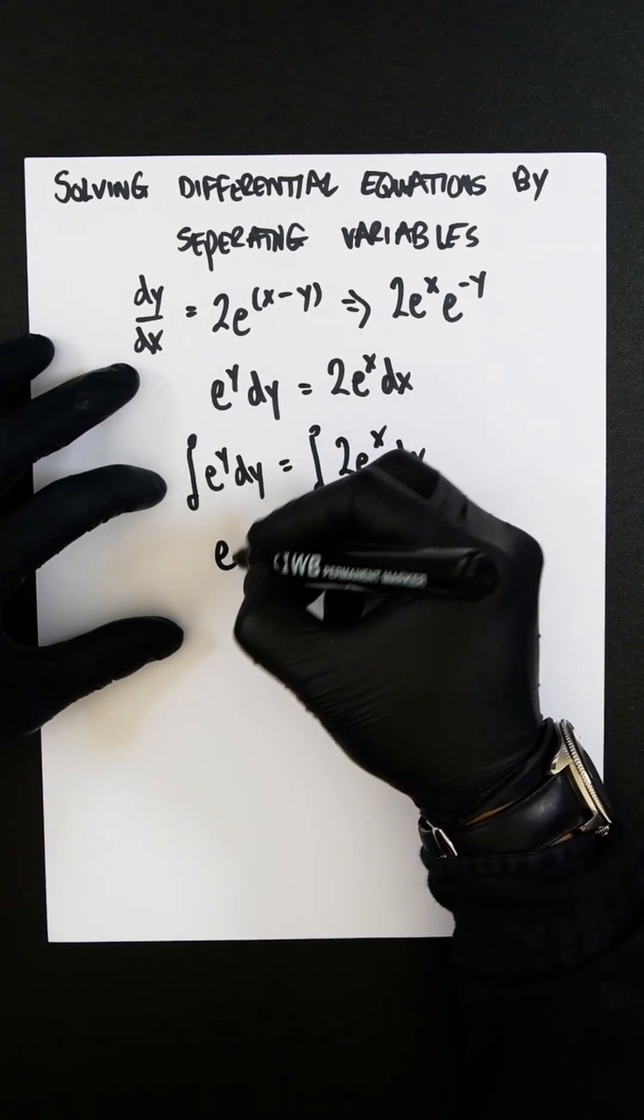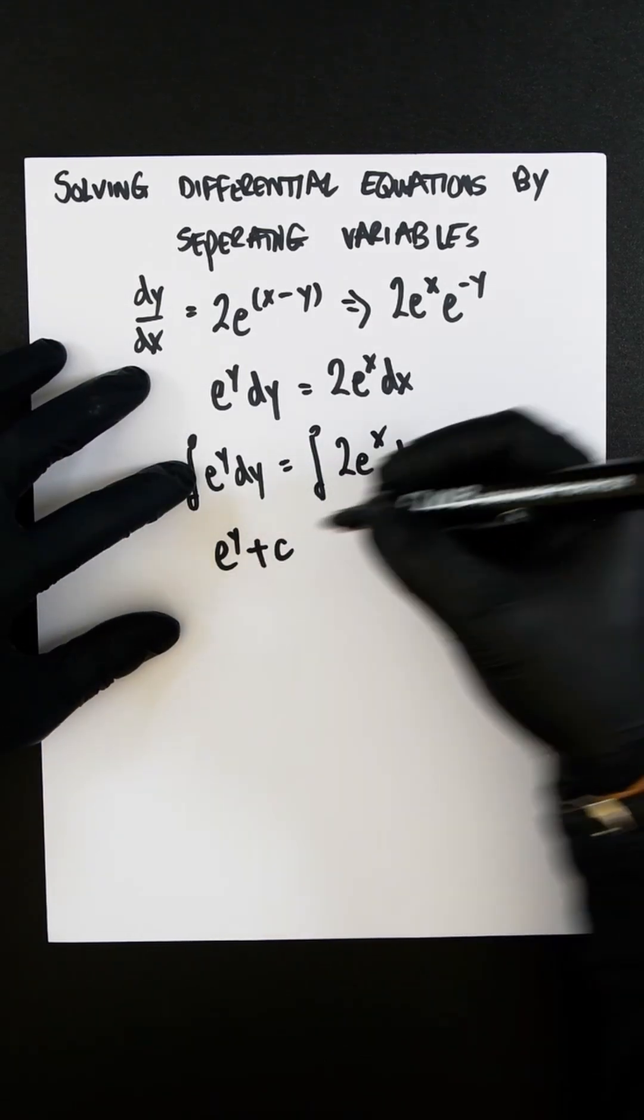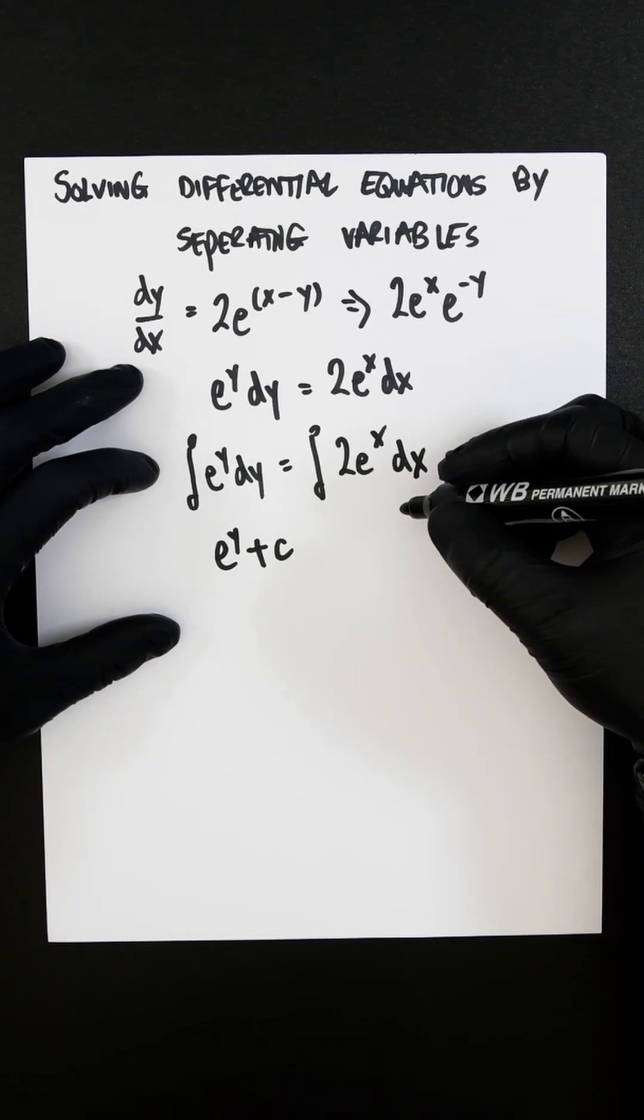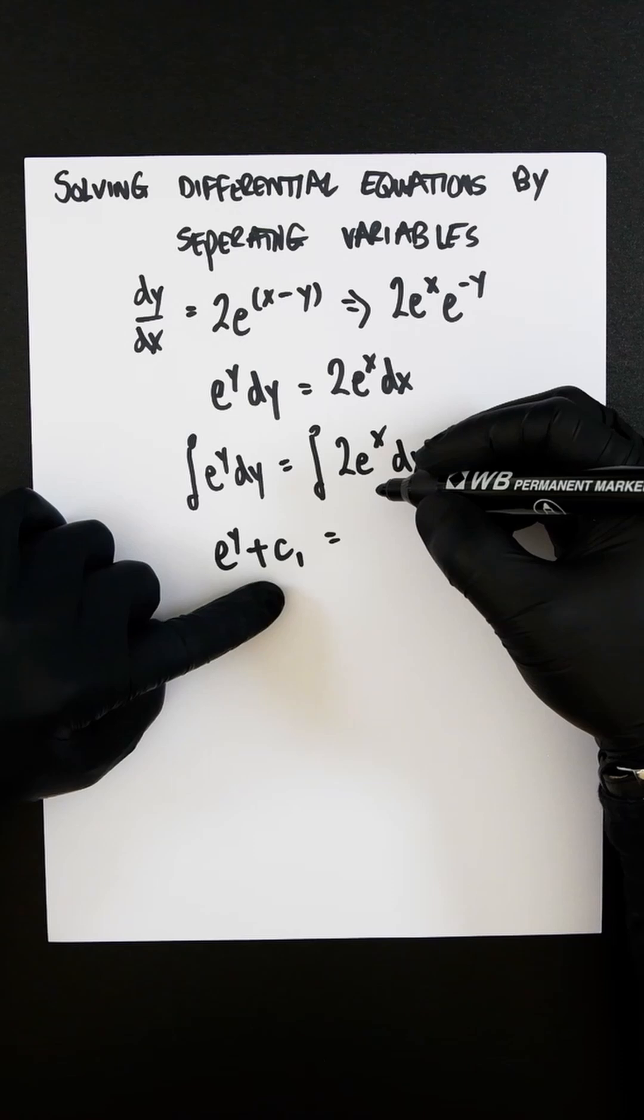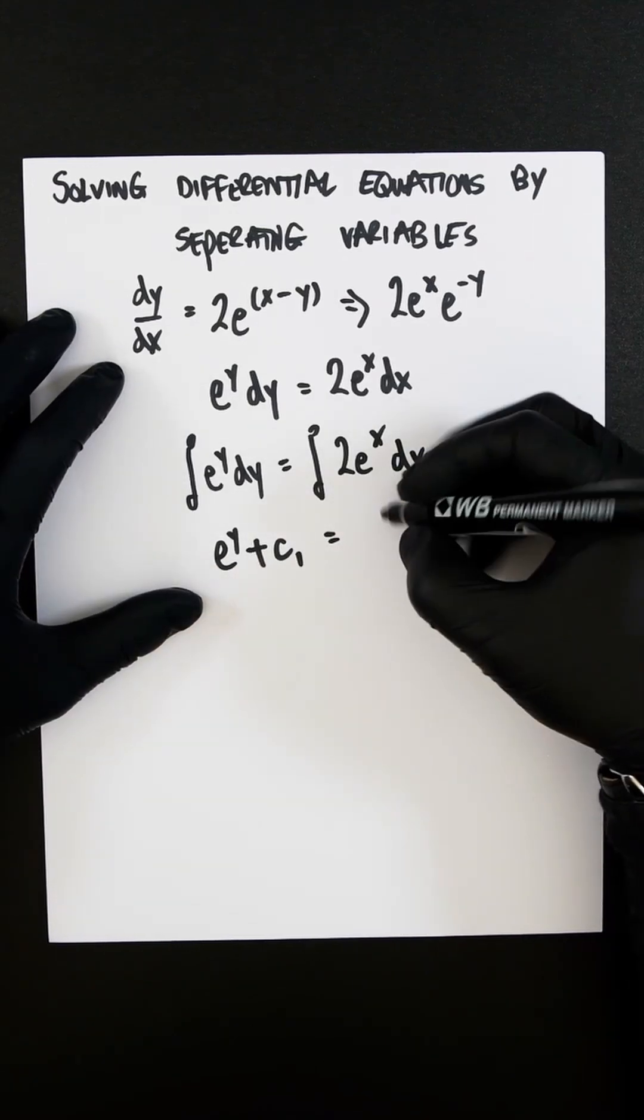This integrated is obviously e^y plus c, because an exponential integrates just becomes the exact same thing. And we have a constant here. We're going to mark that as c1.